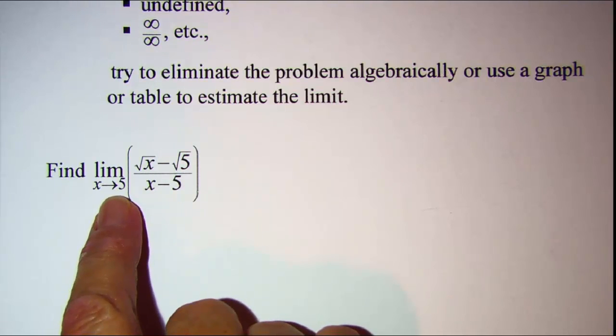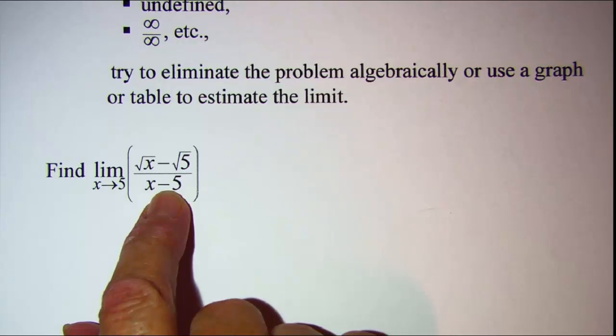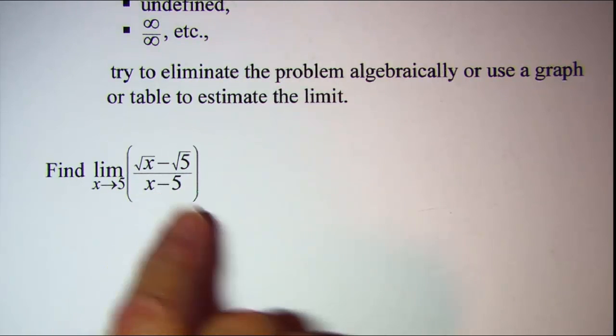As you can see, if we try direct substitution, we would have 5 minus 5, which is 0. Division by 0 is undefined, so we're going to need to eliminate this problem algebraically.